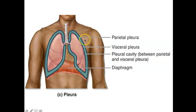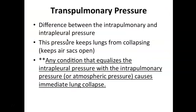The pleura is a double-layer balloon-like structure surrounding your lungs. Transpulmonary pressure is the difference between intrapulmonary and intrapleural pressure, and it keeps the lungs from collapsing — keeping the air sacs open. Any condition that equalizes intrapleural pressure with intrapulmonary pressure causes the lungs to immediately collapse. You want the pressure inside the pleura to be less than the pressure inside the lungs.